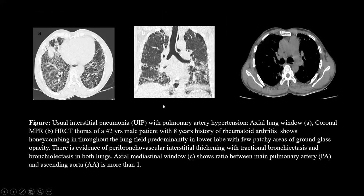CT Thorax of a 42-year-old male with 8 years of rheumatoid arthritis shows honeycombing throughout the lung fields, predominantly in the lower lobes, with patchy areas of ground glass opacity, peribronchiovascular interstitial thickening, and tractional bronchiectasis in both lungs. The mediastinal window shows a pulmonary artery-to-ascending aorta ratio greater than 1, consistent with usual interstitial pneumonia with pulmonary artery hypertension.